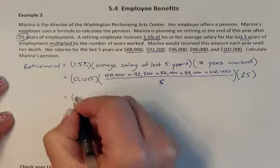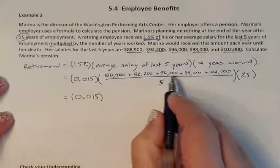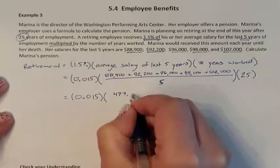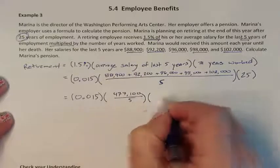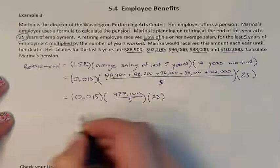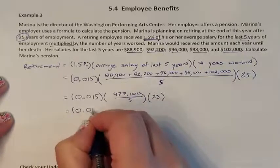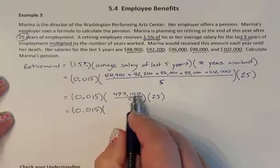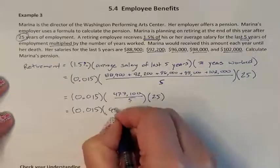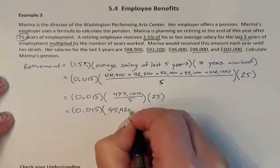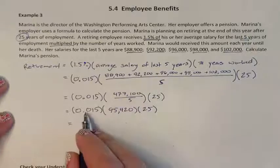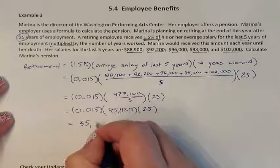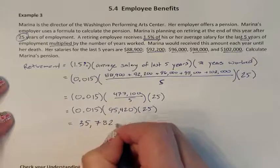So we have our percent. If you add all those numbers up, you get 477,100. Multiply that by the 25 years she worked. So we have 0.015 multiplied by 477,100 divided by 5, which is 95,420. Multiply these three numbers together and you get 35,782.50.